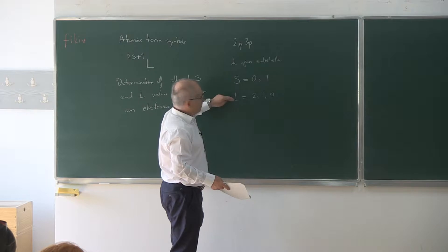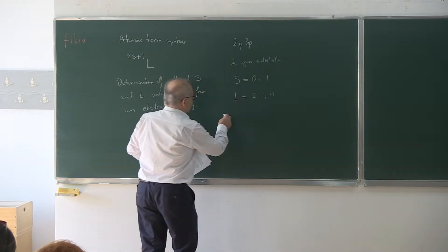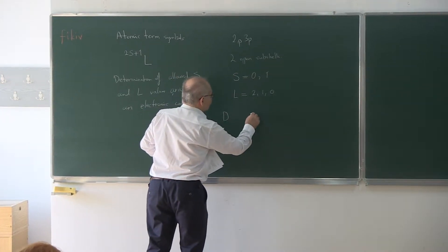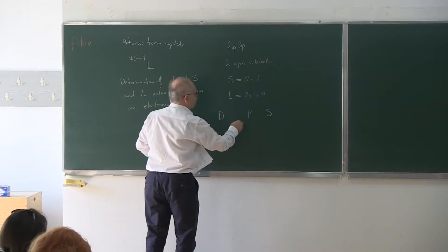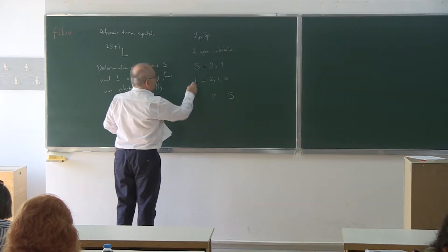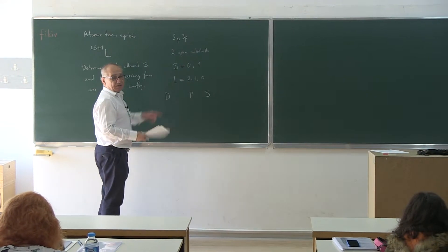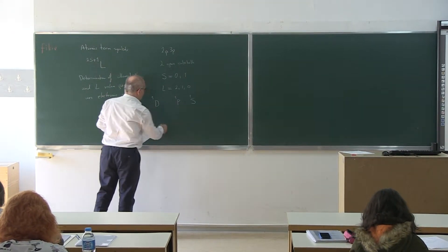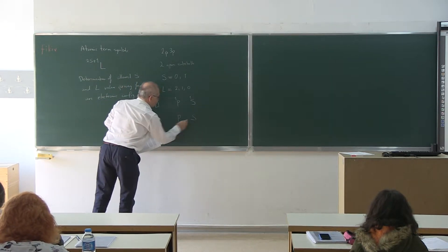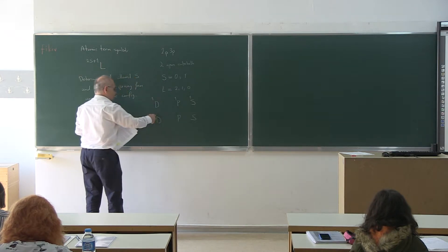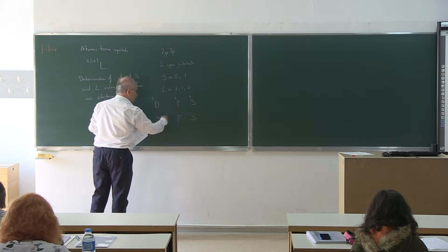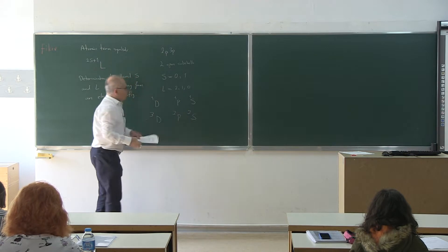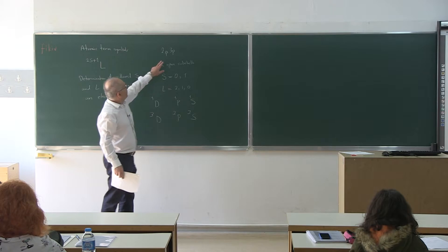Because the two subshells are different, all combinations of S with L are allowed. So we have, according to the L values, D, P, and S — these are the letter codes corresponding to L. When S equals 0, spin multiplicity is 2 times S plus 1, which equals 1. When S equals 1, spin multiplicity is 3. So we have six terms arising from this electron configuration.